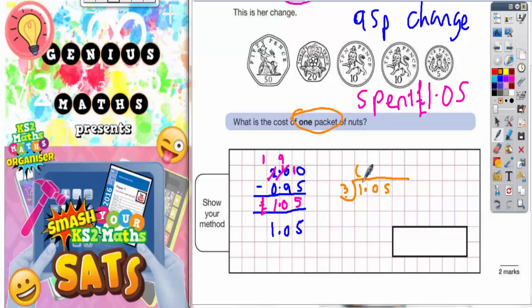So 1.05 and we're sharing that by three. Threes into one will not go, so you put zero at the top, but you haven't used the one yet, so you carry the one across to make ten. Threes into ten goes three times, that's nine. So there's a remainder of one. Carry one across to make fifteen. Threes into fifteen goes five times. Don't forget your decimal point. So we've got 0.35.